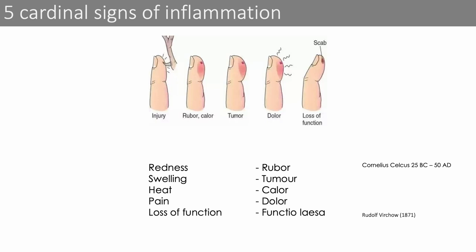There are five cardinal signs of inflammation. The first four were already described some 2,000 years ago by Cornelius Celsius: redness, swelling, heat, and pain. The last sign, loss of function, is attributed to Rudolf Virchow.